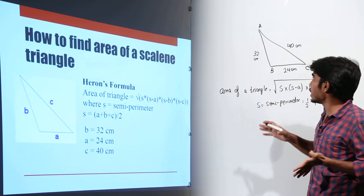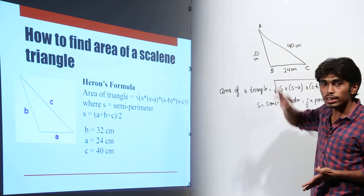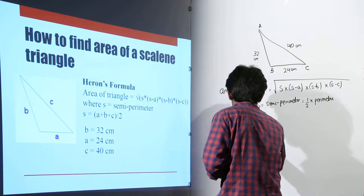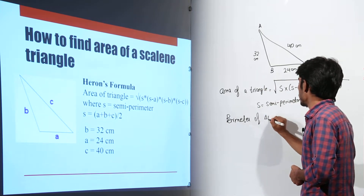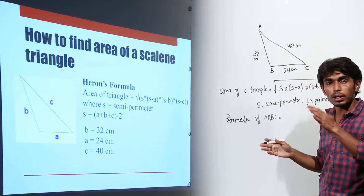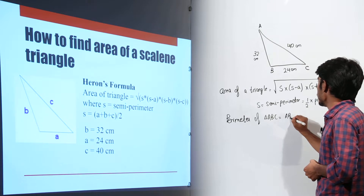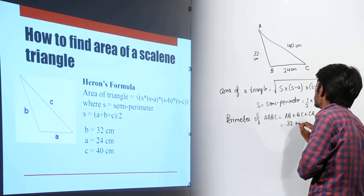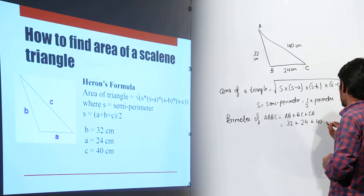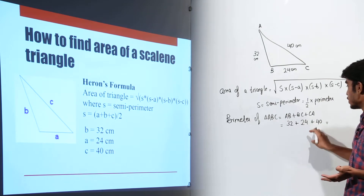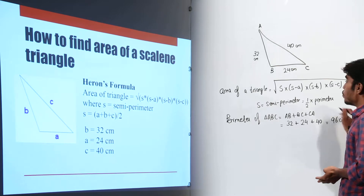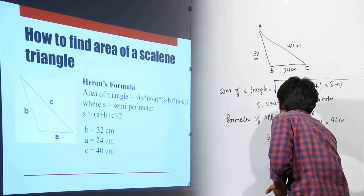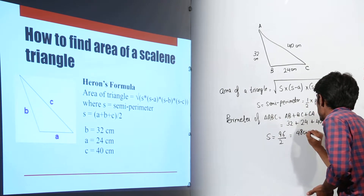Let us calculate the area for the triangle with sides 24, 40 and 32 centimeters. The perimeter of triangle ABC is AB + BC + CA, which is 32 + 24 + 40 = 96 centimeters. We need the semi-perimeter S, so we divide by 2: S = 96 ÷ 2 = 48 centimeters.